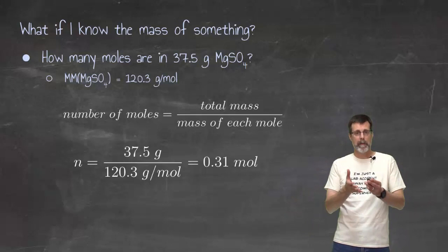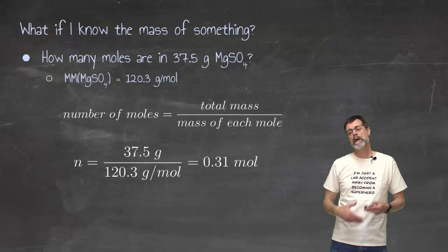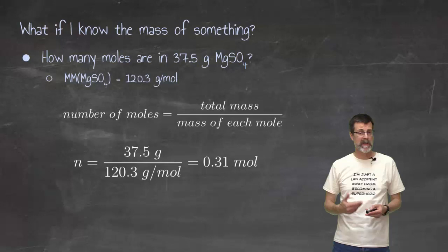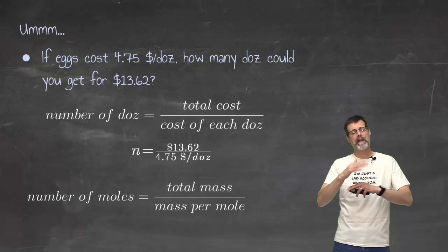Okay? If I know the mass of something, and I don't know the number of moles that I have, I'm going to use the molar mass again. The number of moles would be the total mass divided by the mass of each one. So total mass in the case of this one is 35.7 grams. Each mole has a mass of 120.3, which I found using the molar mass and the numbers in the periodic table, 0.31 moles. Too easy.